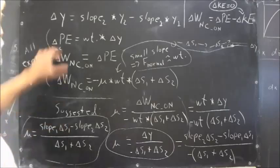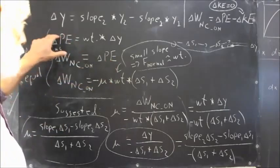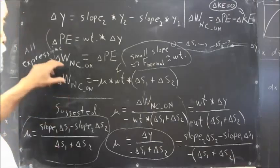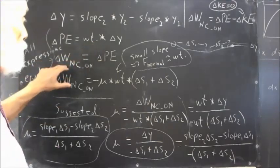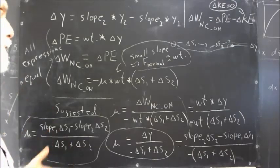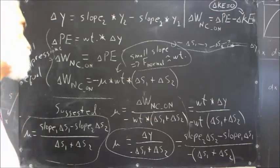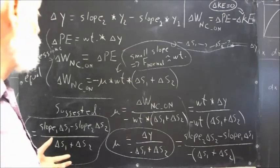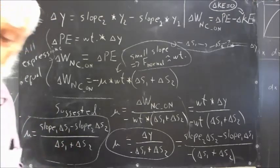Before something is related to the work done by the non-conservative force on the system, we have two different expressions here, but they have to be equal to each other since they're both equal to this one. And then in these two equations, both involve delta PE on one side, so the other two expressions are equal to one another.